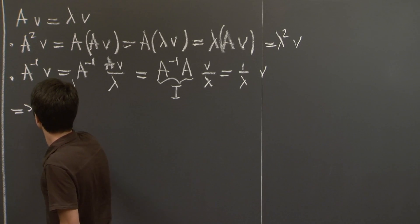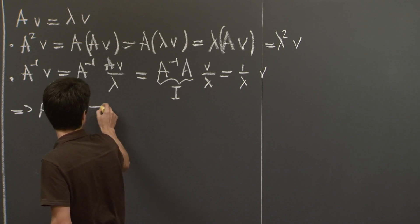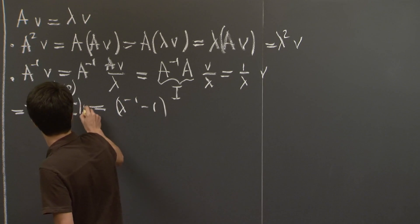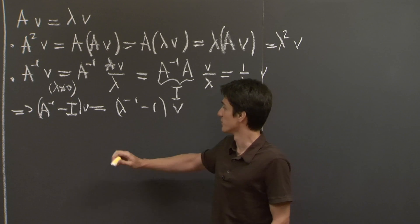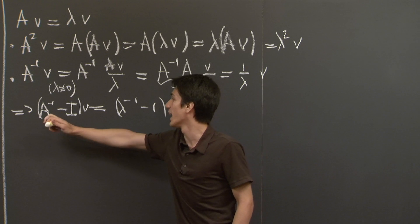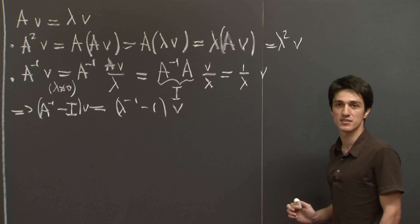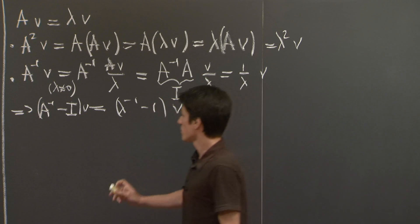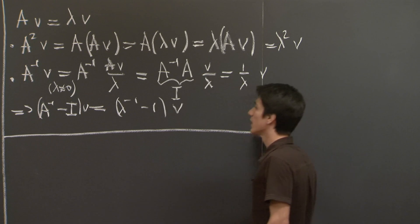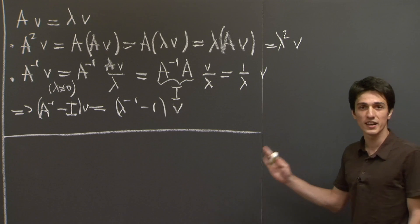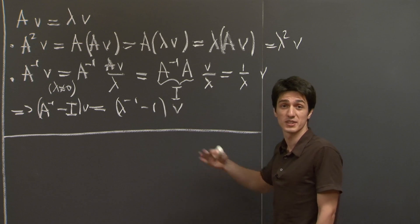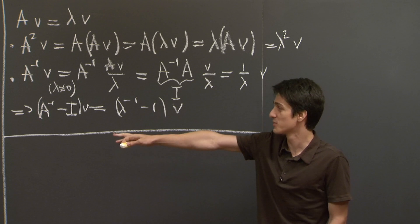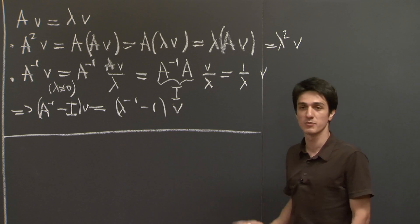And from here, of course, A inverse minus the identity is lambda inverse minus 1, V. So what we've figured out is we just need to find the eigenvalues and eigenvectors of A. And then we have a way of finding what the eigenvalues and eigenvectors of those combinations, A squared and A inverse minus the identity will be.